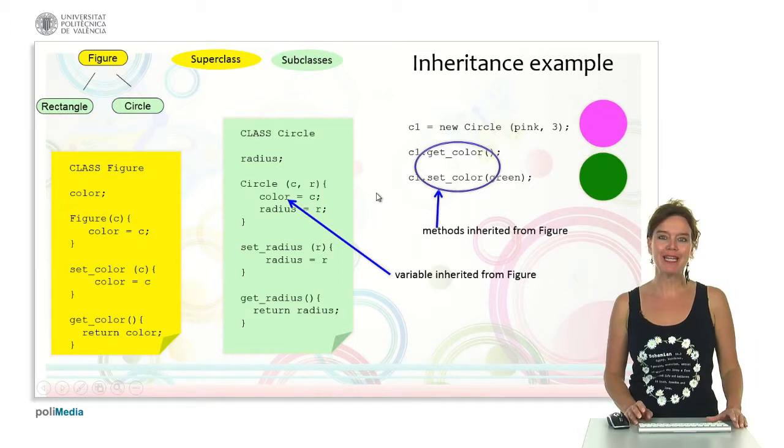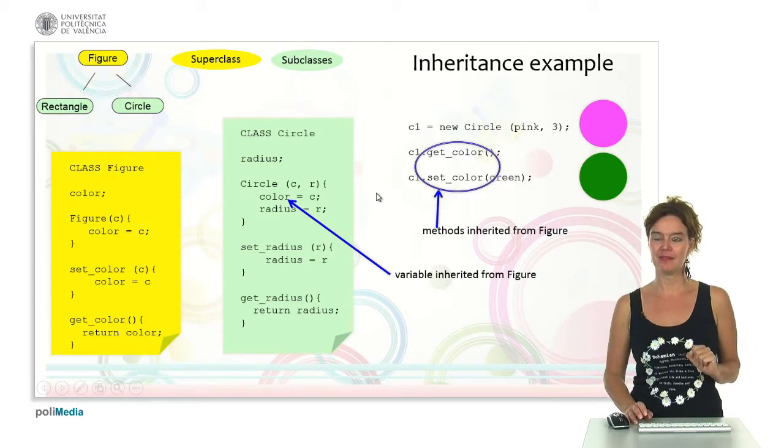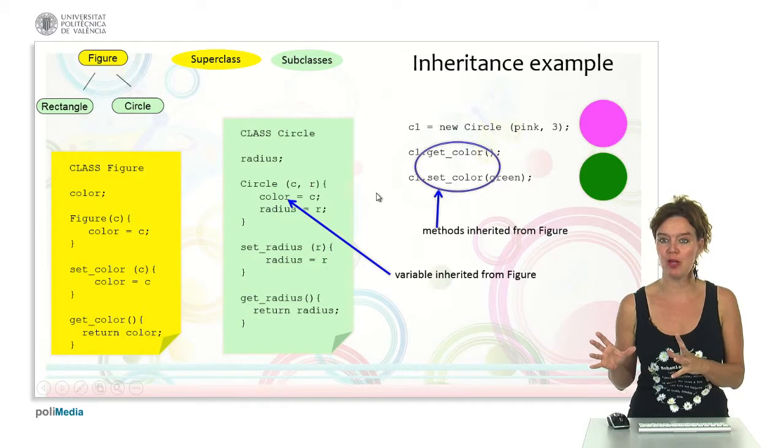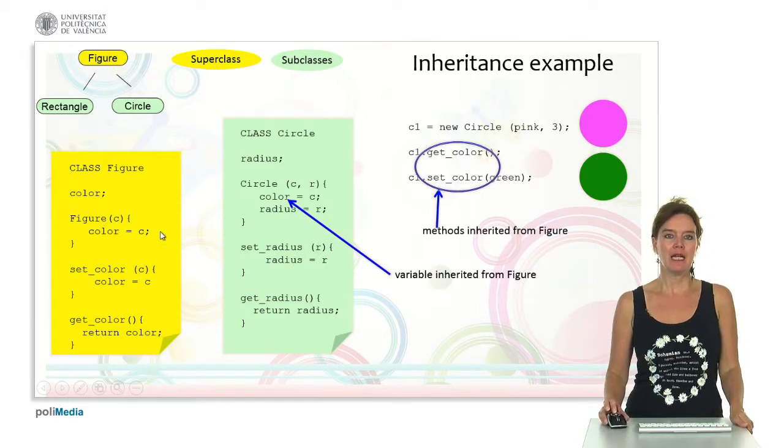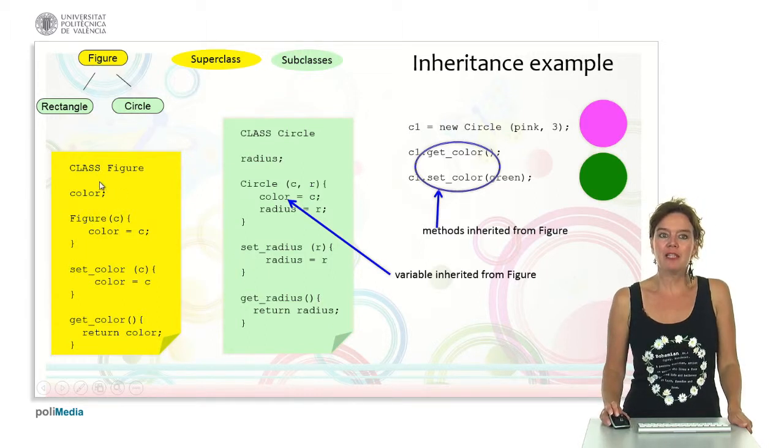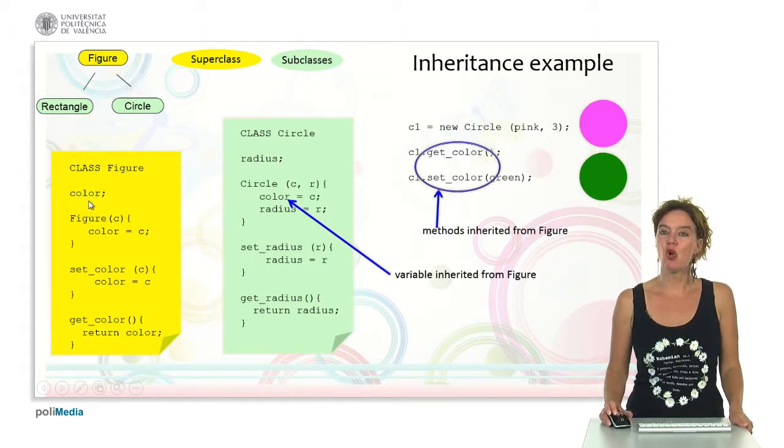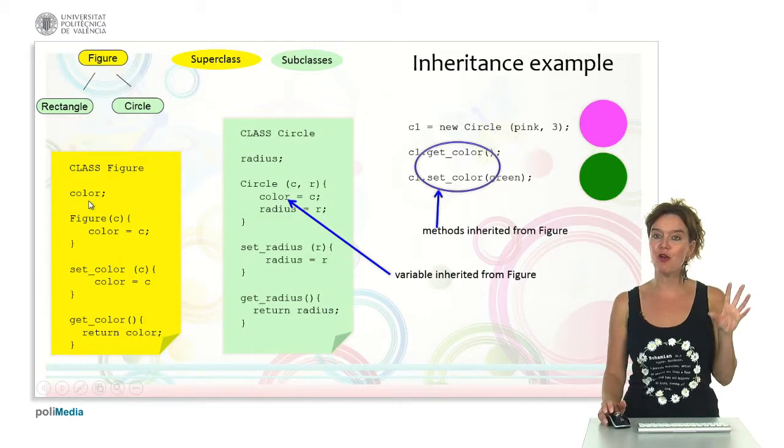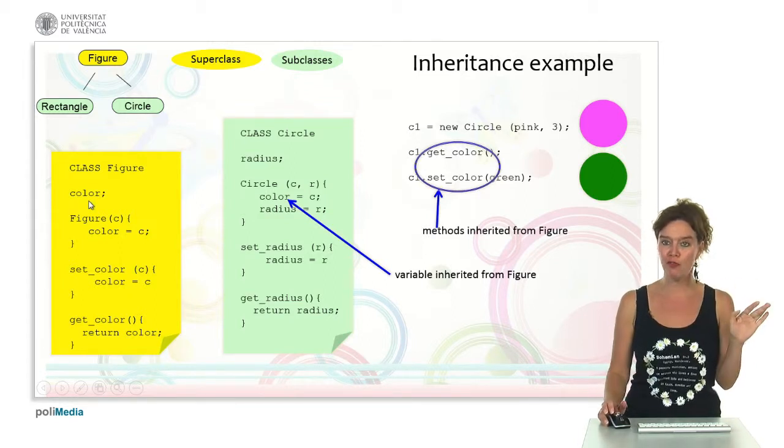So going back to our figures, let's look how we can make this class figure and make circle a subclass. So here we see in yellow class figure. The attribute that class figure has is color because color is a common characteristic of all figures.